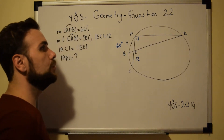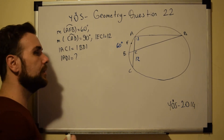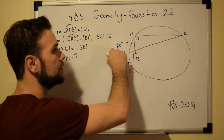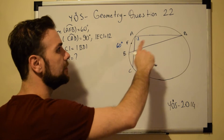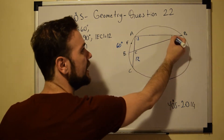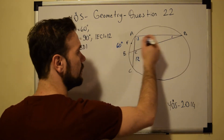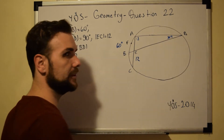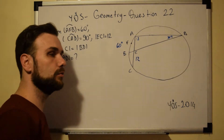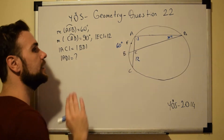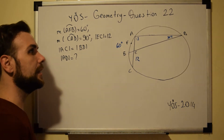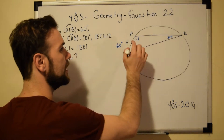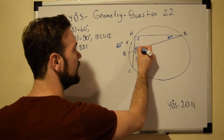The first thing we need to remember is that if an arc is equal to 60 degrees, the interior angle is equal to half of it, which in this case will be 30 degrees. This is a rule we know and apply immediately. Now we have 90 degrees and 30 degrees, so this angle is going to be 60 degrees.